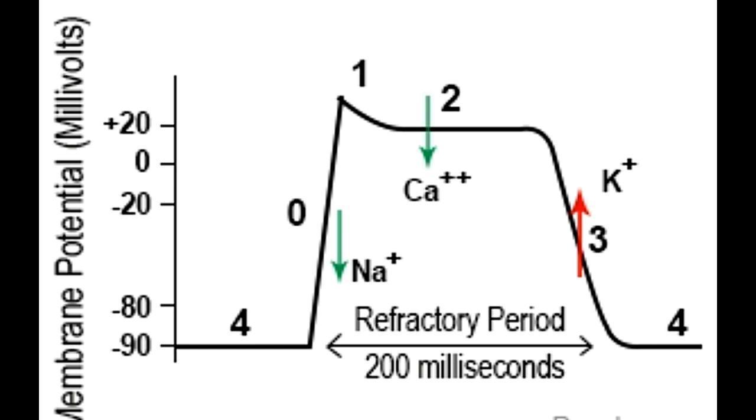Phase 0, rapid depolarization. For the action potential to develop, rapid depolarization, loss of negative charge of the membrane, is required. This occurs through the rapid influx of Na+ ions through the voltage-sensitive sodium channels. As a result, the membrane potential increases from minus 85 to 0 millivolts, and then overshoots to reach a value of plus 20 to plus 30 millivolts.